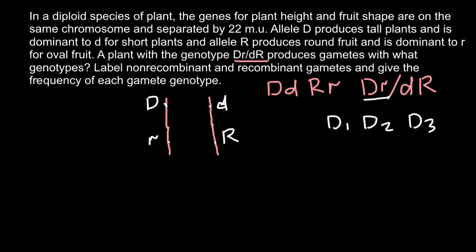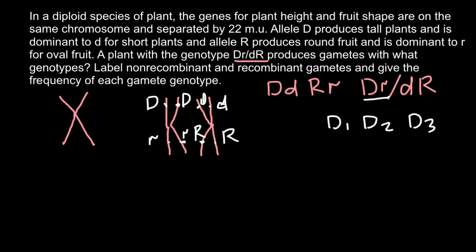During meiosis, each chromosome makes its own copy. Now we have copies of these chromosomes connected at the centromere. Because the new chromosome is a copy of the original, we would have capital D here, and the copy of the homologous chromosome would have small d and small r here, and capital R here.